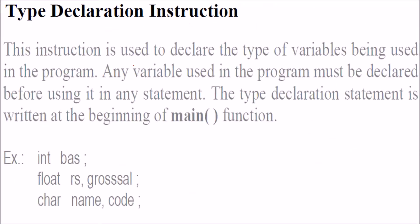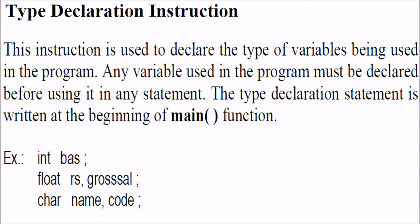The type declaration instruction is used to declare the type of variables. Variables are declared with int, float, and char, which determines the memory size that will be taken. You have to do it in the beginning of the main function in C.